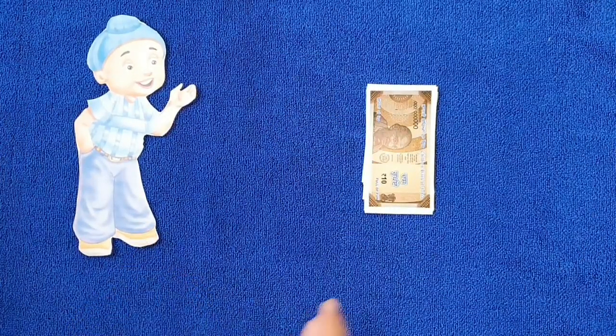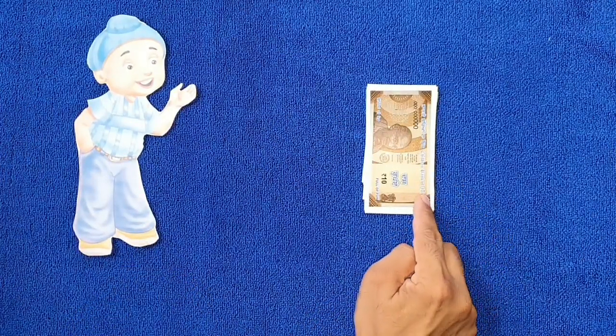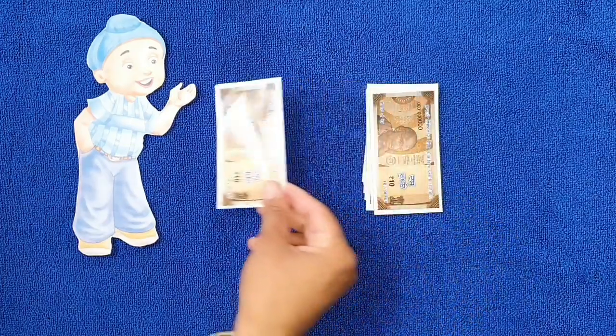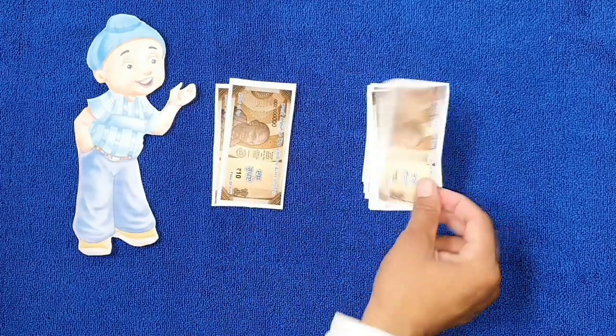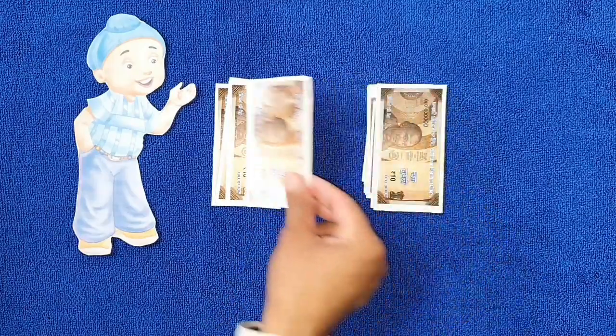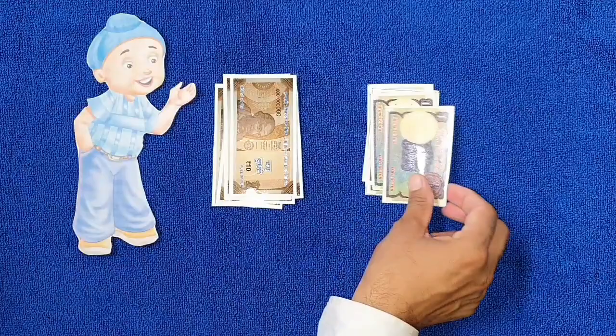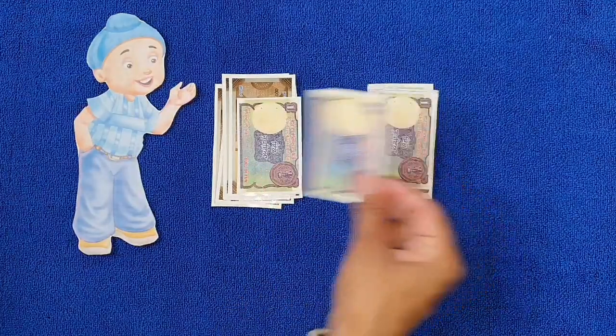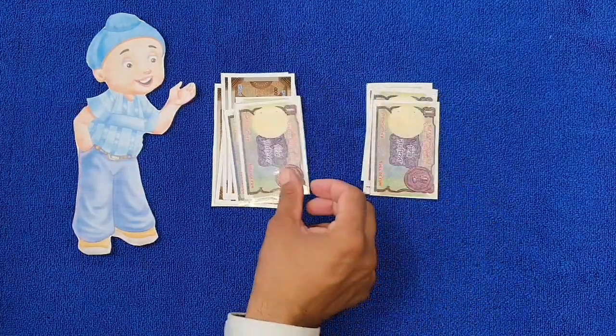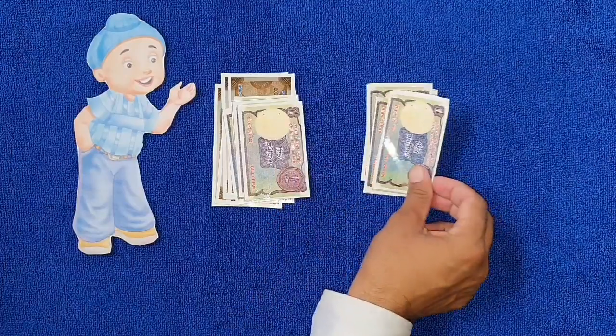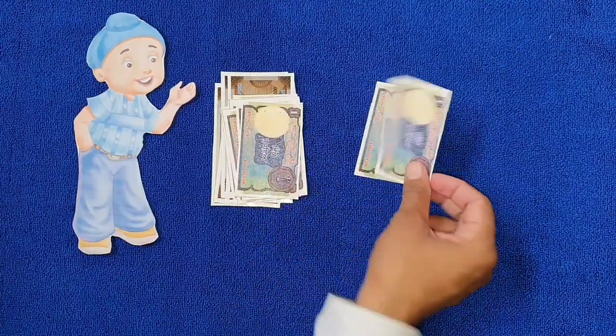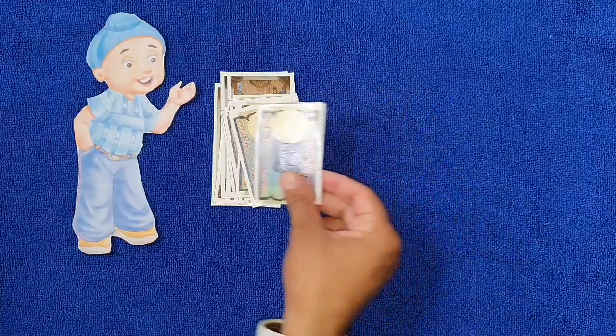Here is Sukhman, he has some money. Let's count the money with Sukhman. 10, 20, 30, 40, 50, 60, 61, 62, 63, 64, 65, 66, 67, 68.